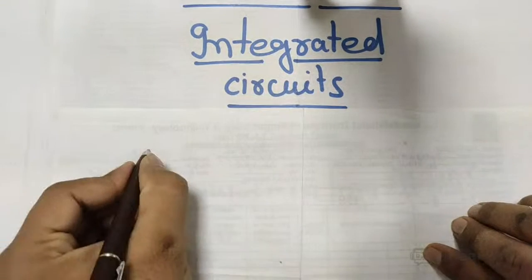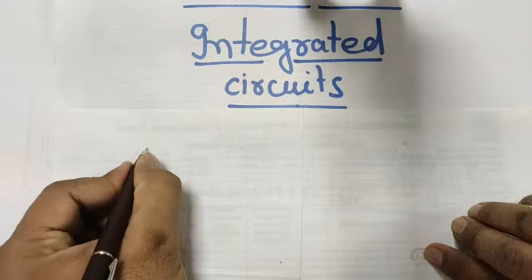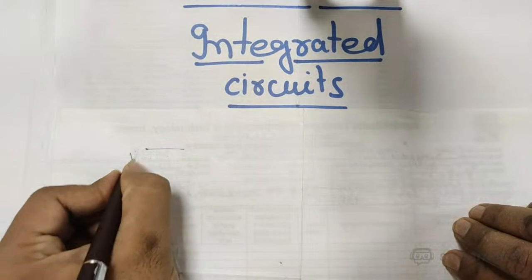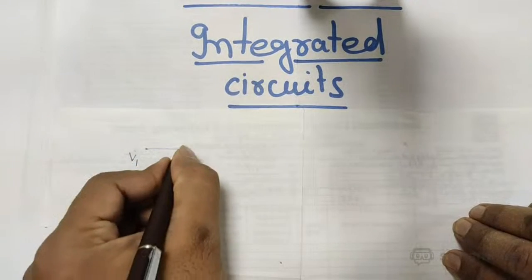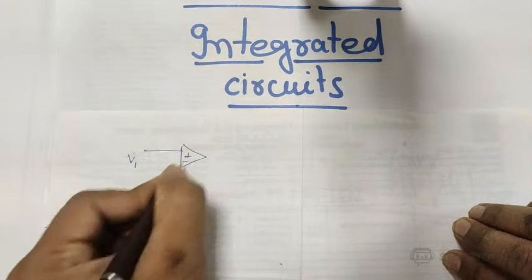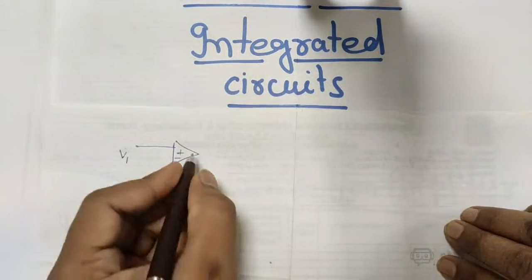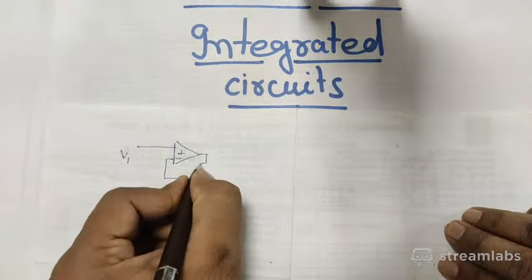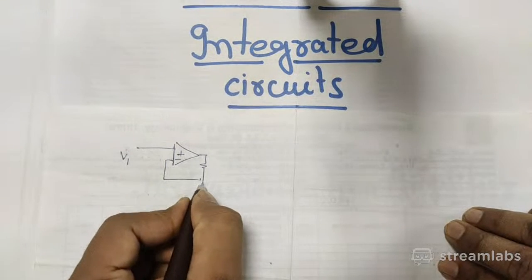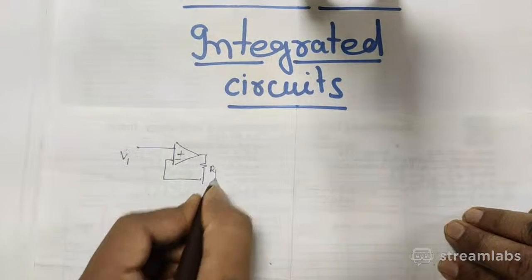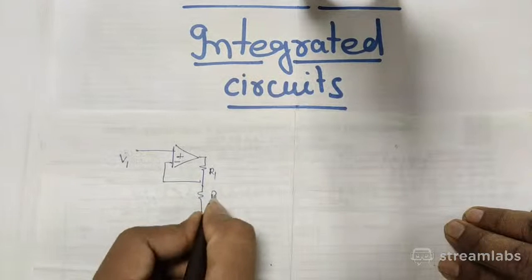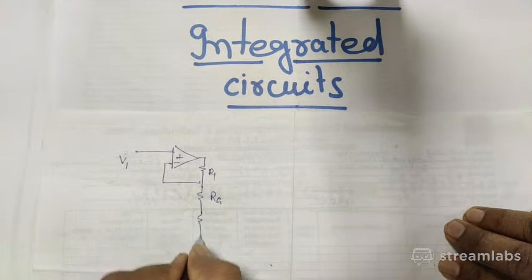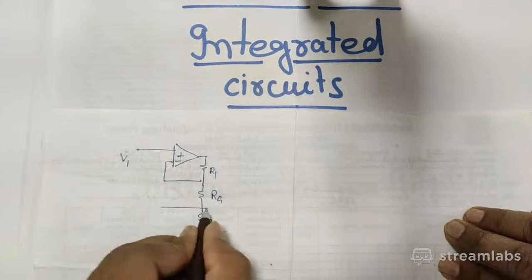If I have a circuit of an operational amplifier where V1 is at the non-inverting input and V2 at the other, R1 is connected at one point, Rg is connected in between, and R2 is connected at the feedback nodes — this forms the standard instrumentation amplifier circuit.